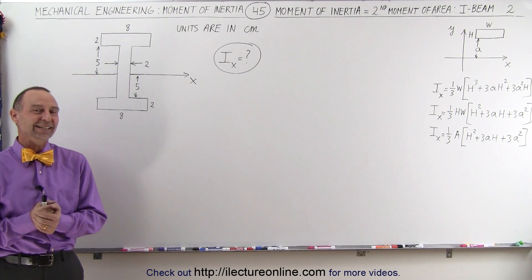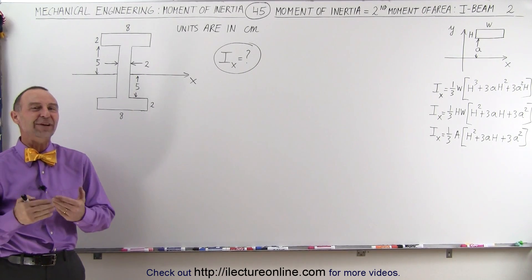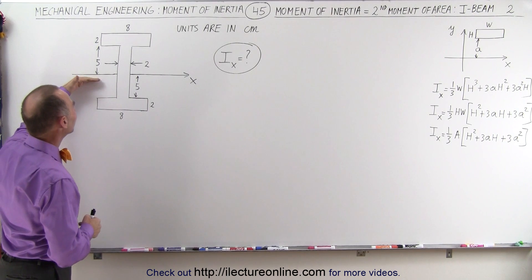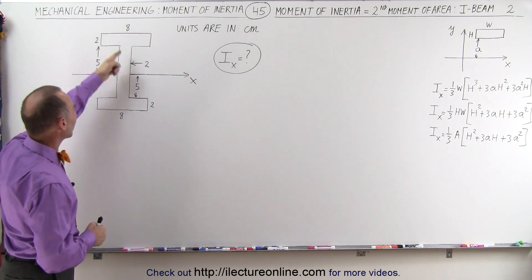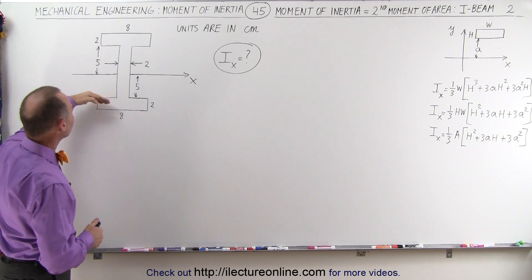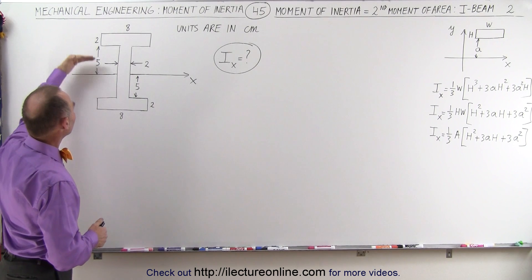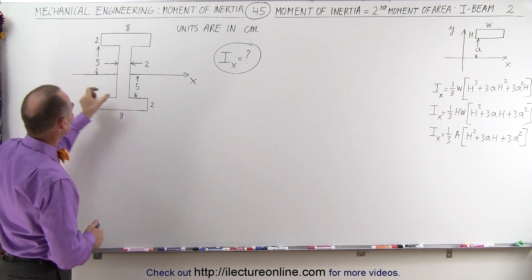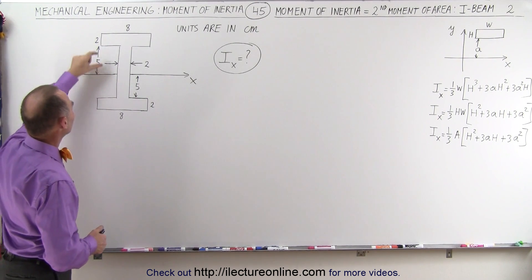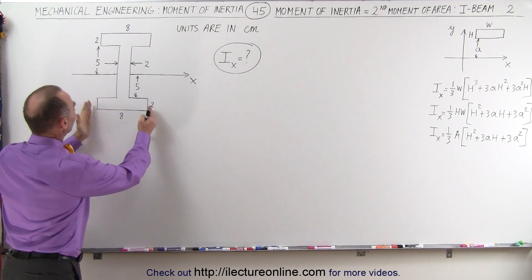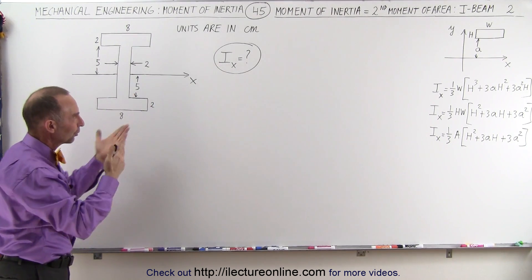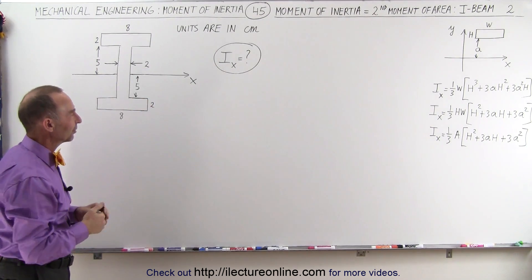Welcome to iLectra Online. Now we're ready to find the moment of inertia about the x-axis for an I-beam. The total height is 10 centimeters. The web thickness is 2 centimeters, and the flange widths are 8 centimeters on each side. All units are in centimeters.